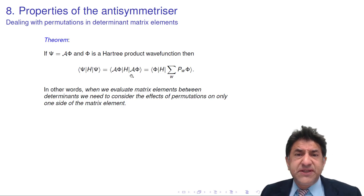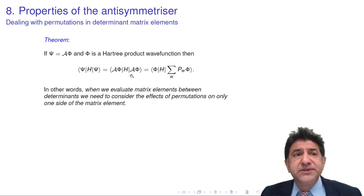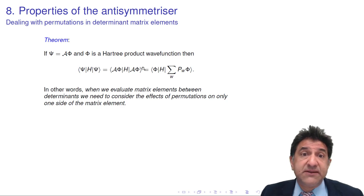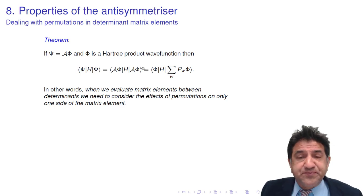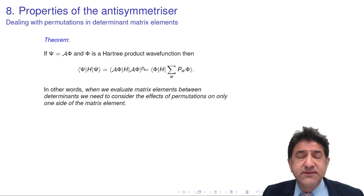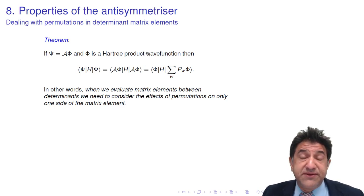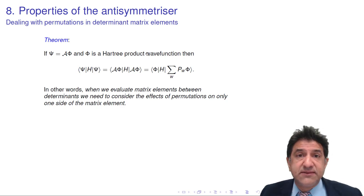Welcome to Chemistry 3007. We're going to talk about another property of the anti-symmetrizer. In the last mini-lecture, we saw that the square of the anti-symmetrizer was an anti-symmetrizer, except for a factor.